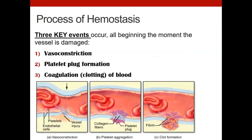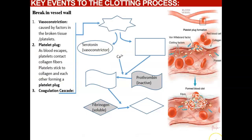For the clotting process of hemostasis, there are three key events that occur the moment a blood vessel is damaged: vasoconstriction, platelet plug formation, and the coagulation or clotting of the blood. Vasoconstriction is just a vascular spasm that happens really quickly and briefly — the muscles around the blood vessel contract.